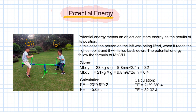Potential energy means an object can store energy as a result of its position. In this case, the person on the left is being lifted; when they reach the highest point, they will be forced back down. Potential energy follows the formula: mass × gravity × height. The first person has a mass of 23 kg, gravity of 9.8 m/s², and height of 0.2 m. The second person has a mass of 21 kg, gravity of 9.8 m/s², and height of 0.4 m. Person one has 45.08 joules and person two has 82.32 joules.